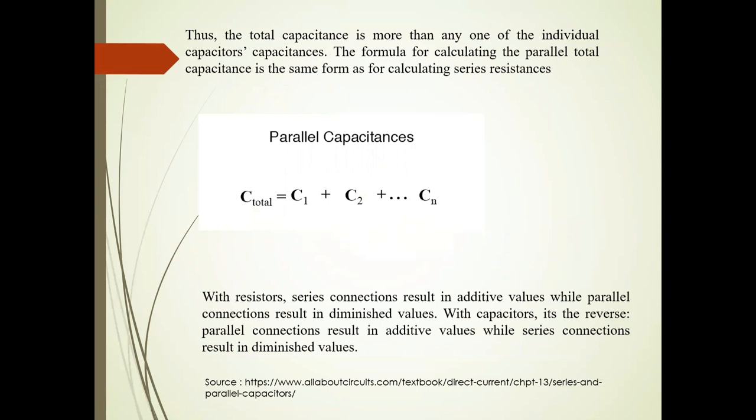The total capacitance is more than any one of the individual capacitors' capacitances. The formula is C total = C1 + C2 + ... + Cn.